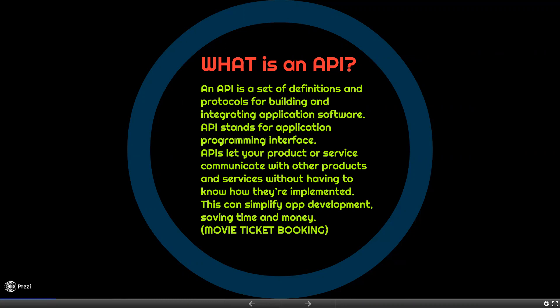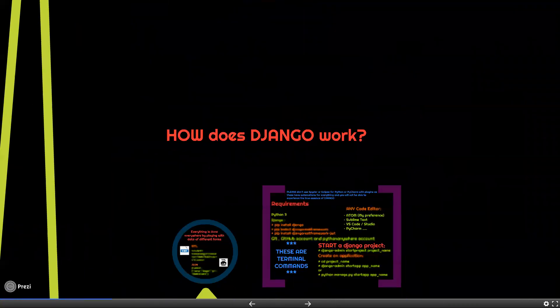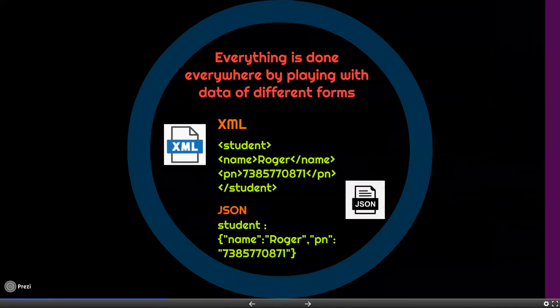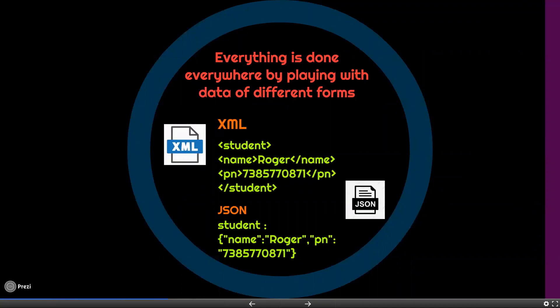One of the best ways to make an API is using Django's REST API framework. The REST API framework uses JavaScript Object Notation — that is, JSON data. Everything is done by playing with different forms of data. The most commonly used types are XML format and JSON format. XML uses greater-than and less-than signs, similar to HTML scripting, while JSON uses curly braces. REST APIs are used with JSON data.